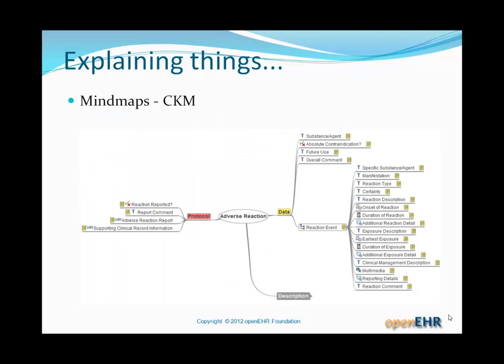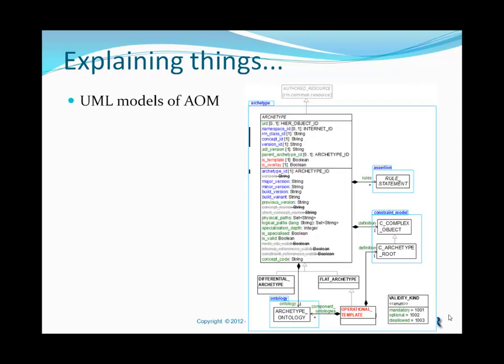Sometimes we'll look at mind maps, which are usually taken from the clinical knowledge manager at openehr.org — there's an example of one for the adverse reaction archetype. Mind maps give us a nice, clean way of looking at the essential characteristics of an archetype without worrying about a lot of the technical details. Since this is a technical course, we will also look at the UML models of the archetype object model, and I'll give a quick overview without going in too deeply.